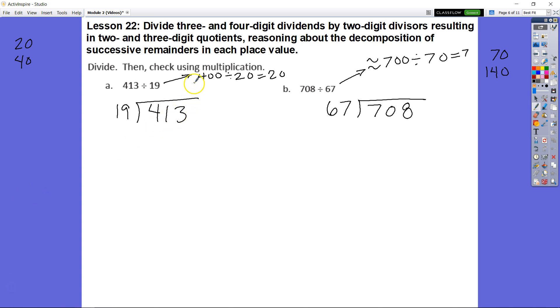So we're going to go ahead and get started. As you can see I already did my rounding and I said 413 divided by 19 is around 400 divided by 20 which would give us 20. So our answer should come out to be somewhere around 20. And same thing for B. We said 708 divided by 67 is around 700 divided by 70 which gives us an answer of 7.